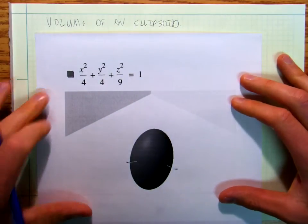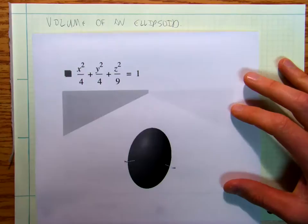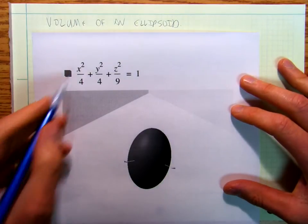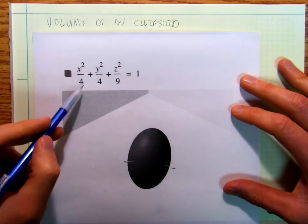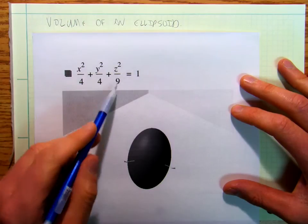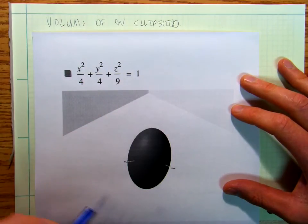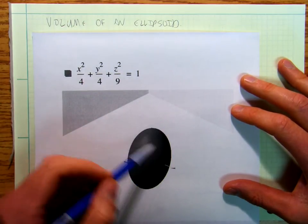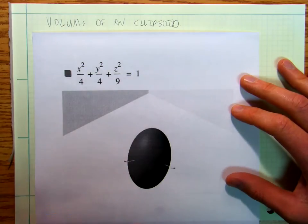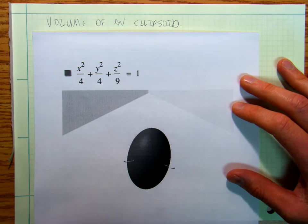So I've got on my graphing calculator here, I've got x squared over 4 plus y squared over 4 plus z squared over 9 equals 1. And so that gives me an ellipsoid. So it's a three-dimensional object that's kind of hard to show in a two-dimensional video.